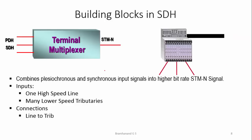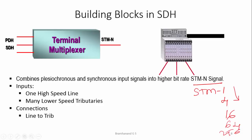A terminal multiplexer combines plesiochronous and synchronous input signals into a higher bit rate STM-N signal. STM stands for Synchronous Transport Module of order N, and we can have STM-1, 4, 16, 64, 256, etc., whose data rates increase in the same order. The terminal multiplexer has one high-speed line and many lower-speed tributaries; PDH signals are tributaries which connect to the high-speed data line.